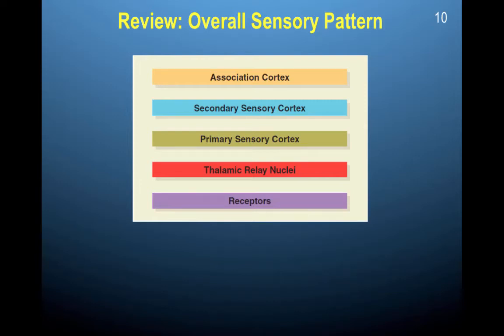Now that we've talked about this basic pattern from going from receptors through the thalamus into the primary sensory cortex, secondary sensory cortex, up to the association cortices, we're going to be talking about how this works specifically in the visual system.